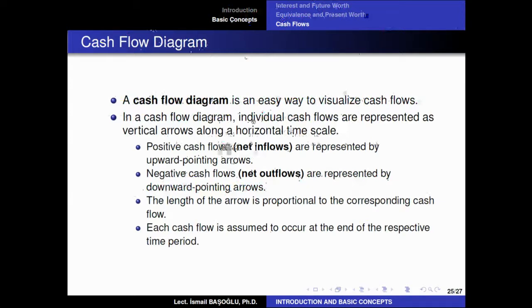The positive cash flows — or net inflows, meaning money coming into the account — are represented by upward pointing arrows and are counted as positive. The negative cash flows, which are outflows or net outflows, are represented by downward pointing arrows. Anything that gets out of your account is shown as a negative cash flow — a downward pointing arrow. If it is an income or an inflow, then it is shown as an upward pointing arrow.